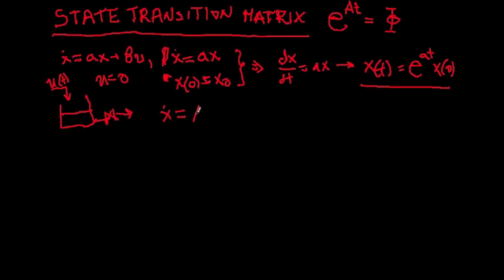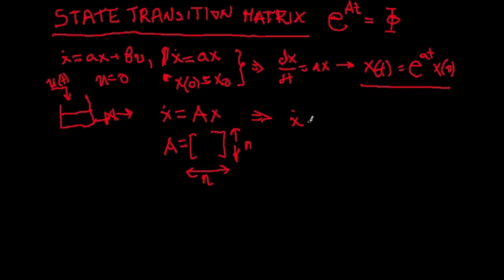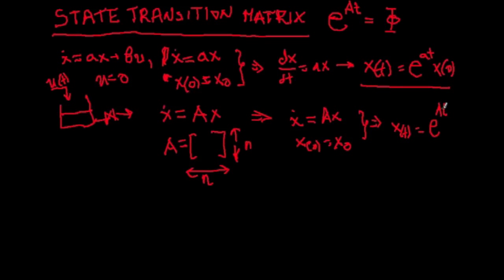In the same way, if we have x-dot = A·x, where A is now an n-by-n matrix, by analogy we obtain that x(t) = e^(At)·x(0), where x(0) is the initial condition vector. In this case, e^(At) is the state transition matrix, also called the matrix exponential.